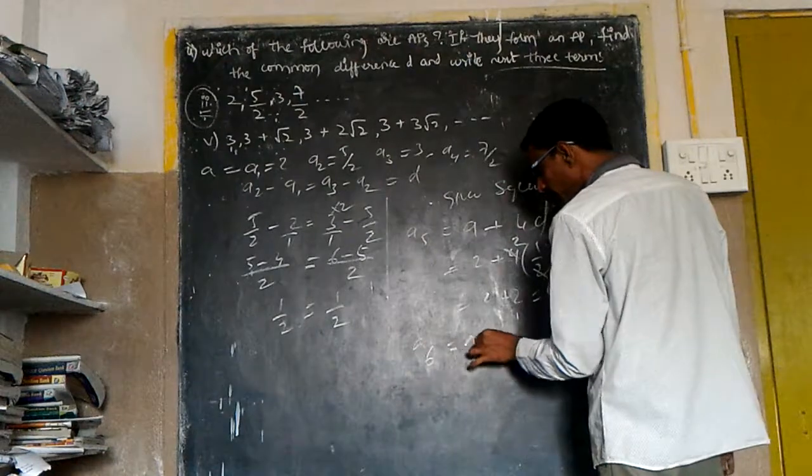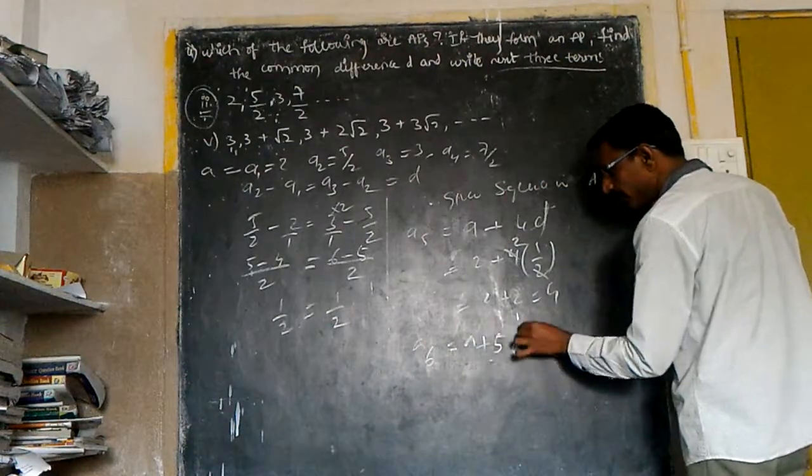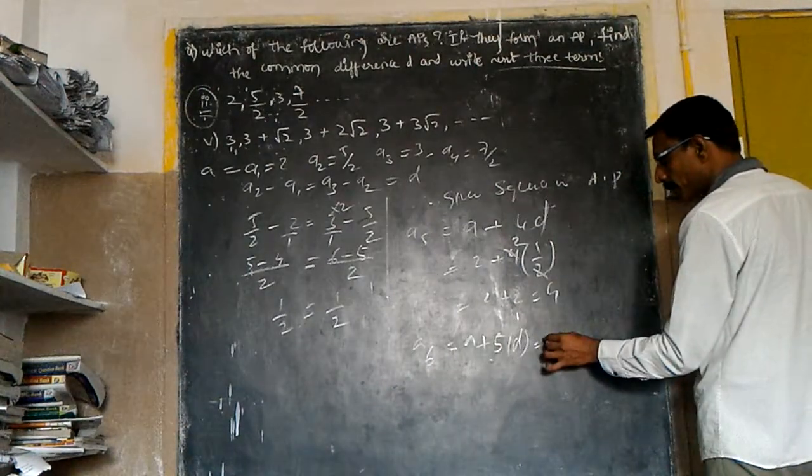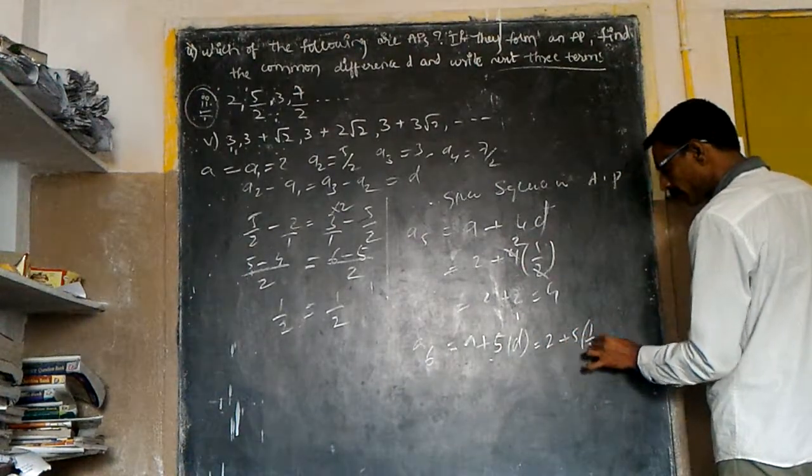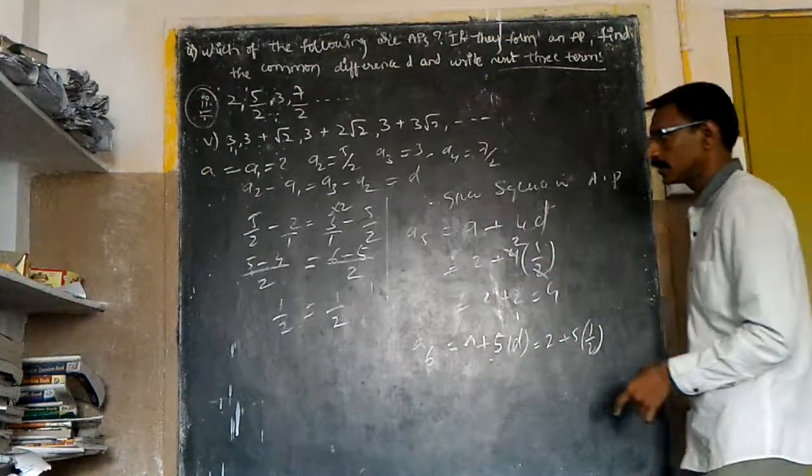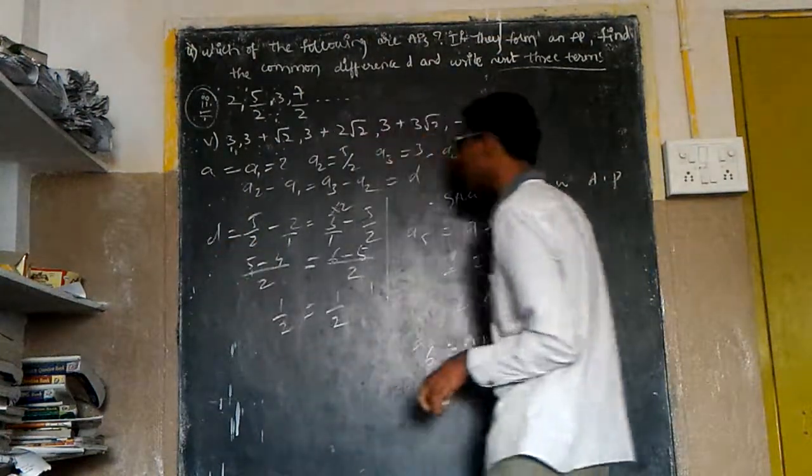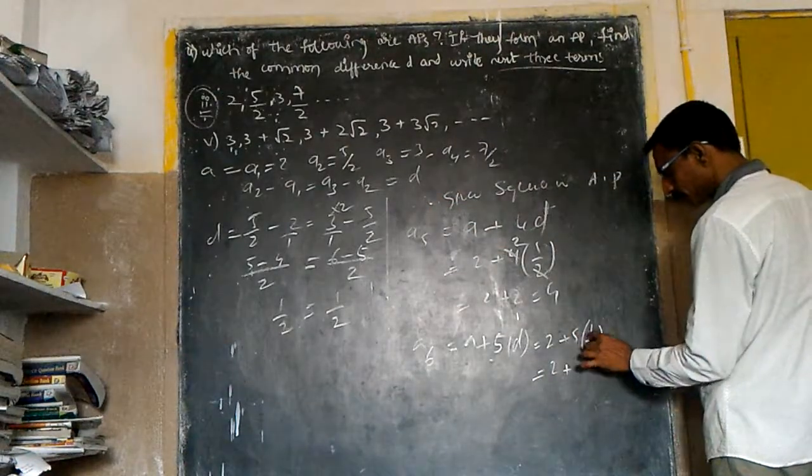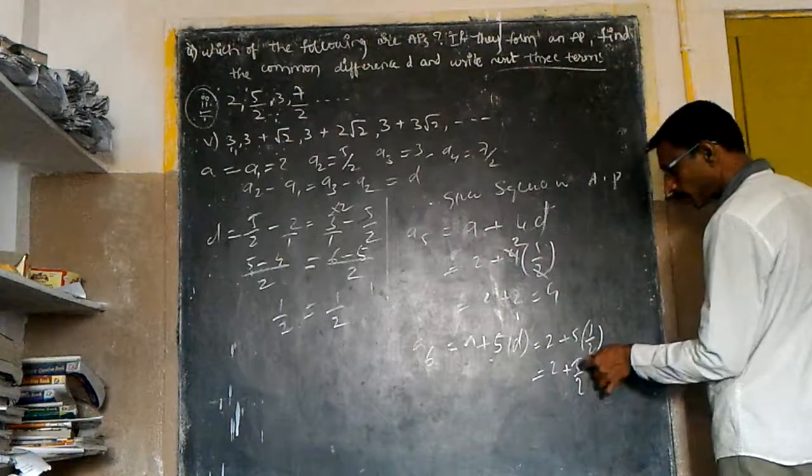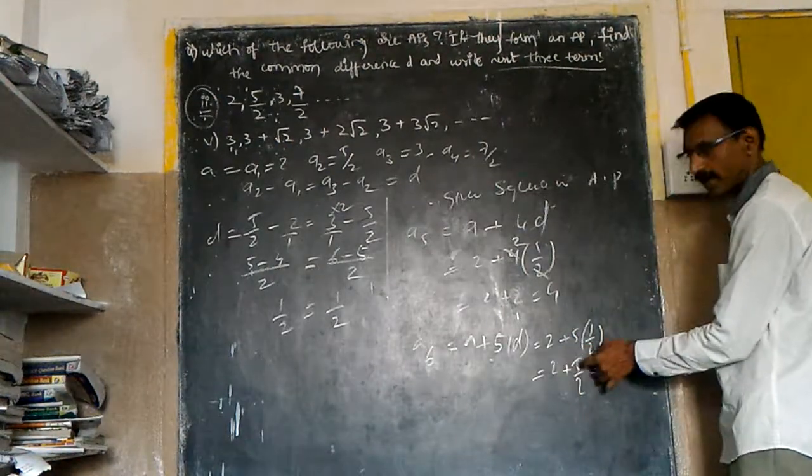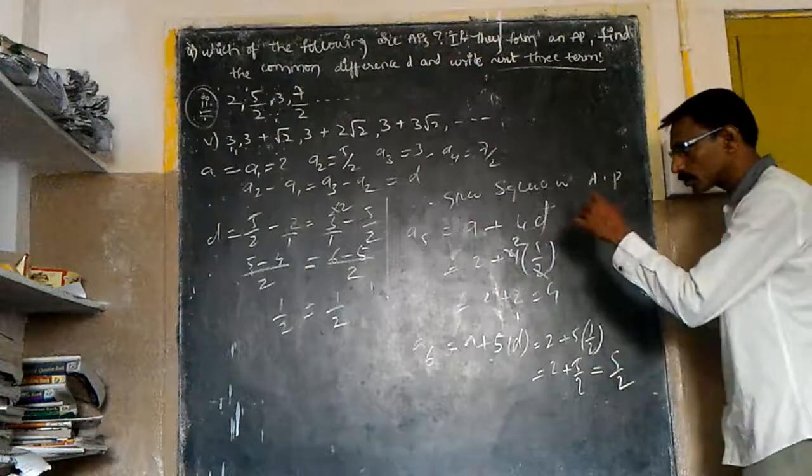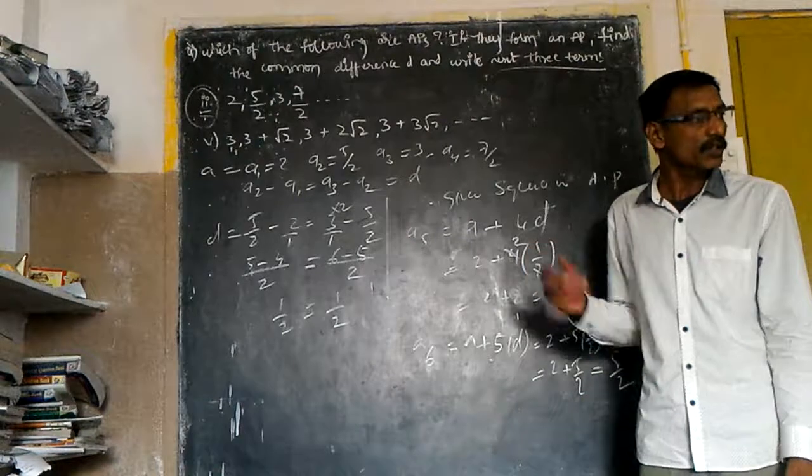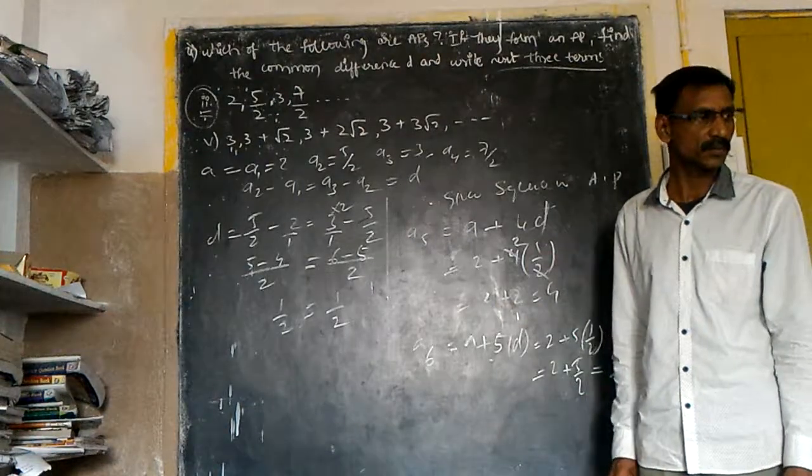A6 equals A plus how much? 5D. Keep in mind. What is my A? 2. 2 plus 5 into 1/2, because the common difference is D. Keep in mind, this is D. 2 plus 5/2, 2 into 2 is 4 plus 5, that's 9/2. So on, you write down up to 4 terms. I explained the first and second term, right? You write down 2 more terms.